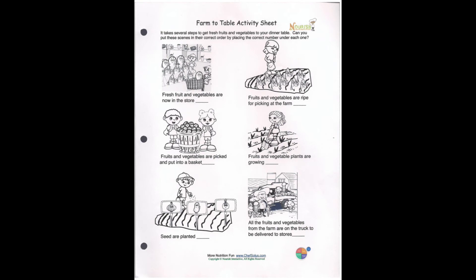The sheet says it takes several steps to get fresh fruits and vegetables to your dinner table. Can you put these in the correct order by placing the correct number under each one? If you've printed it off, there are little lines where you'll put the number. If you have not, just write the number inside each of the six boxes.